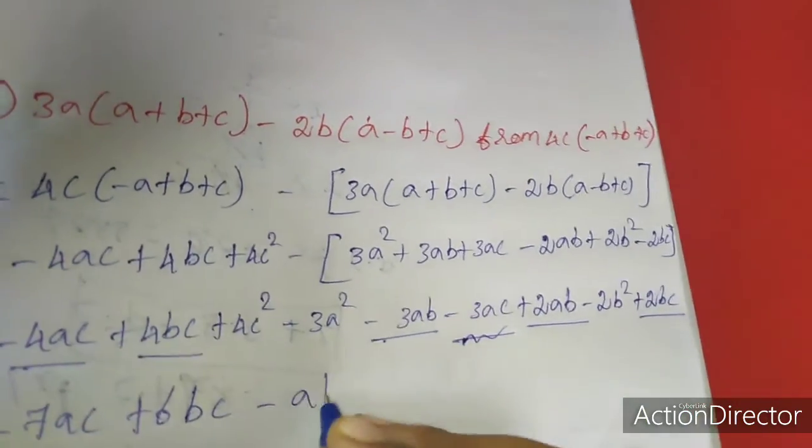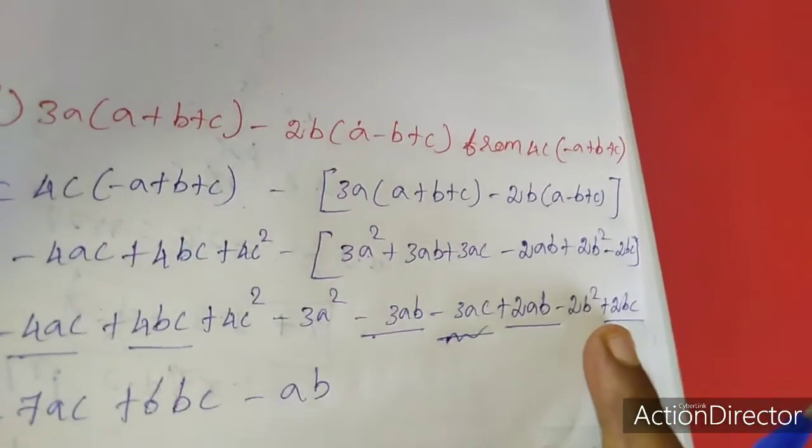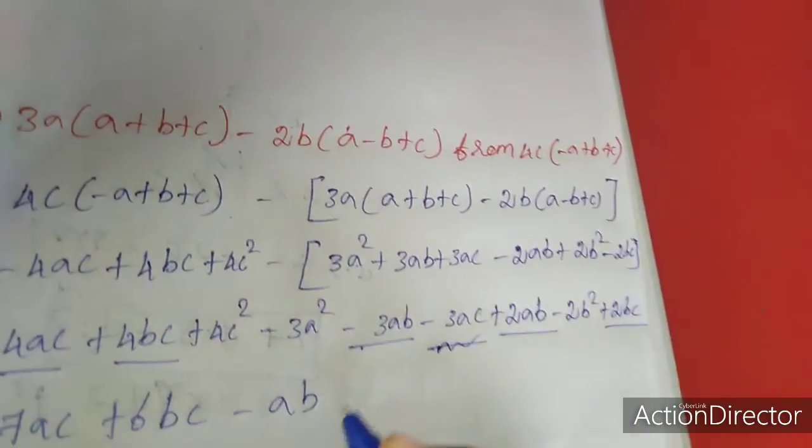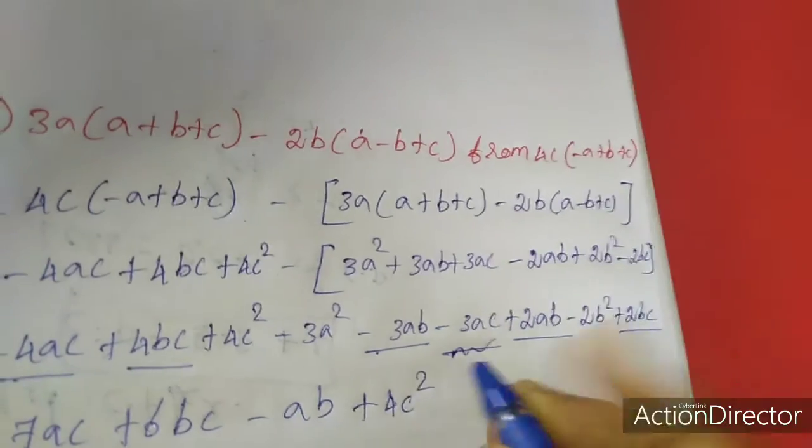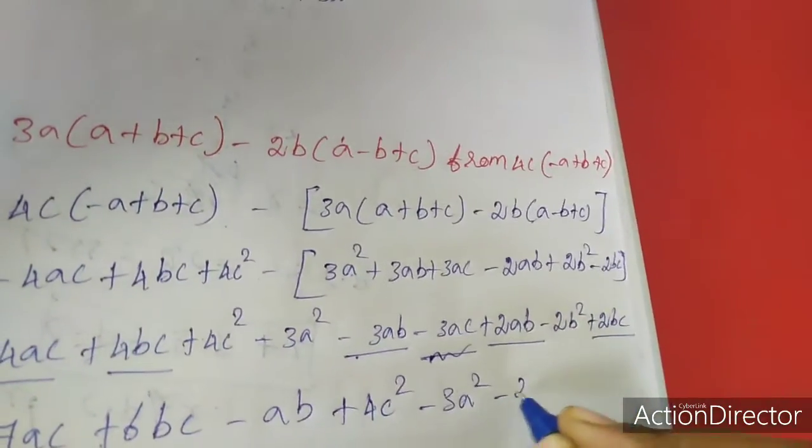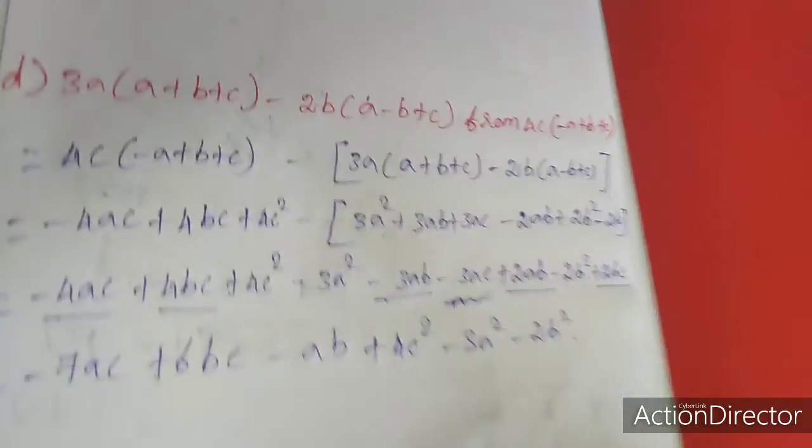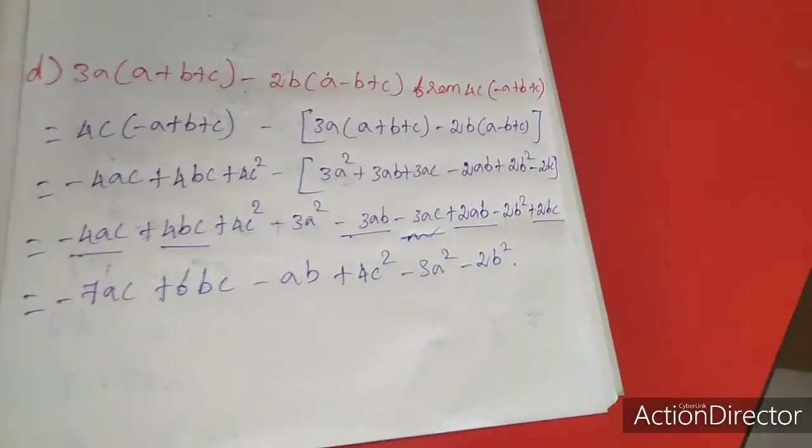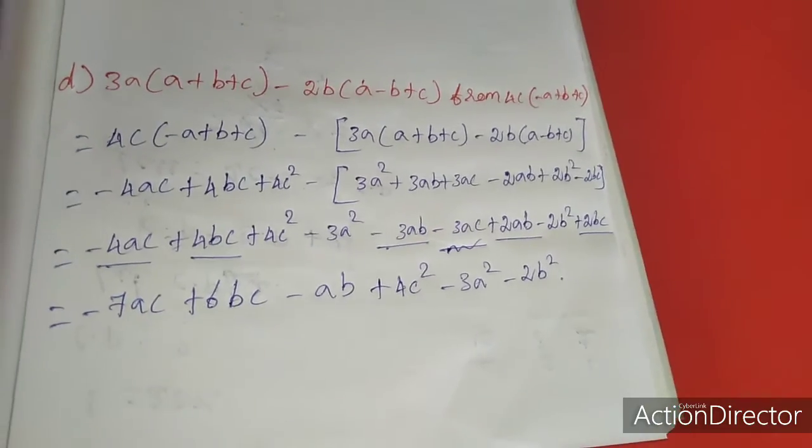Balance terms we write as is: 4C² - 3A² - 2B². That's all. Up to this, exercise 9.3 is completed. In next class, we will move to 9.4. Thank you.